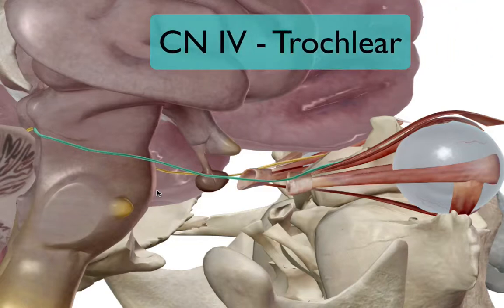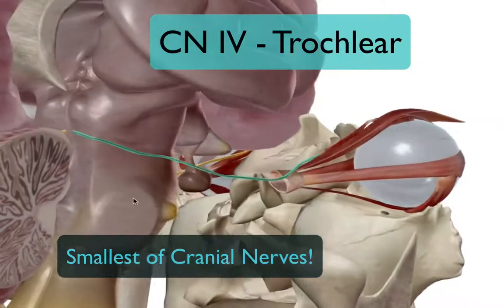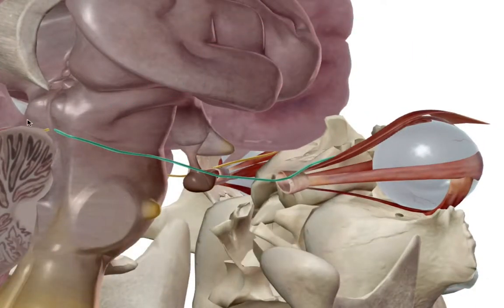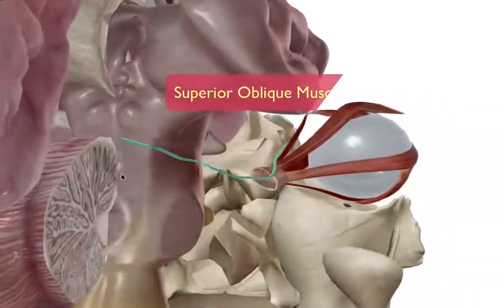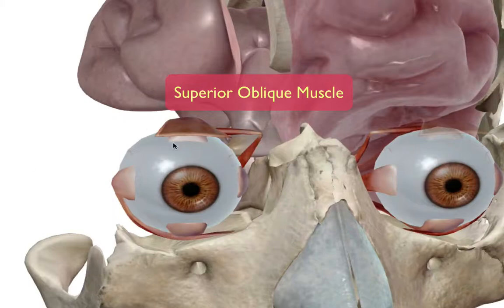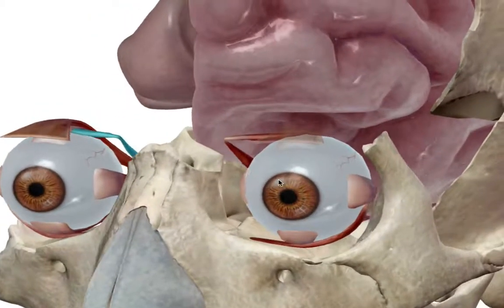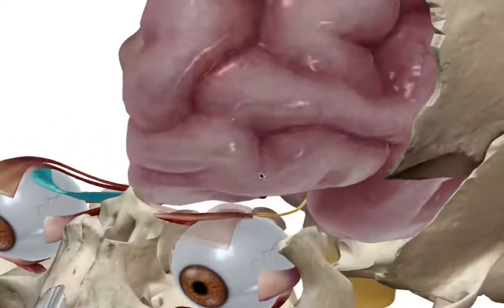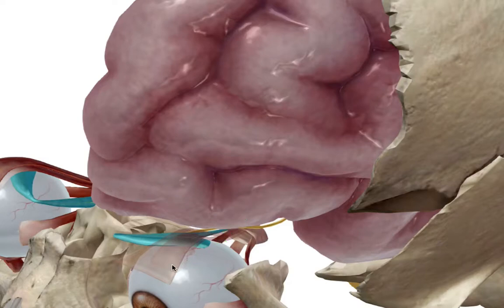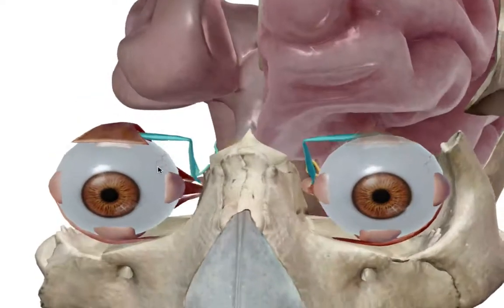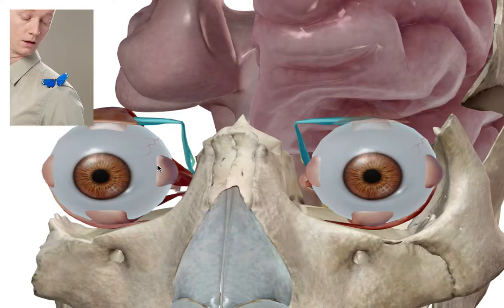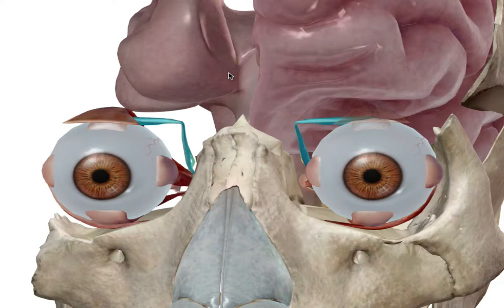Cranial nerve number four is the trochlear nerve — the smallest of the cranial nerves. It has an unusual origin on the posterior side of the brain stem, wraps around the pons, and then innervates the superior oblique muscle posteriorly. This muscle is responsible for infralateral movement of the eye — looking down toward your shoulder while keeping your face straight. This is the trochlear nerve, CN IV.